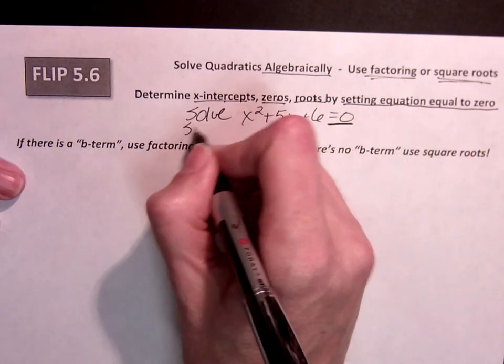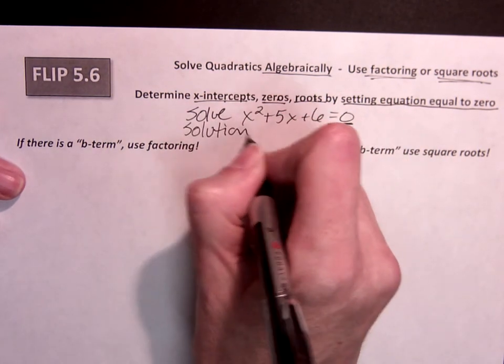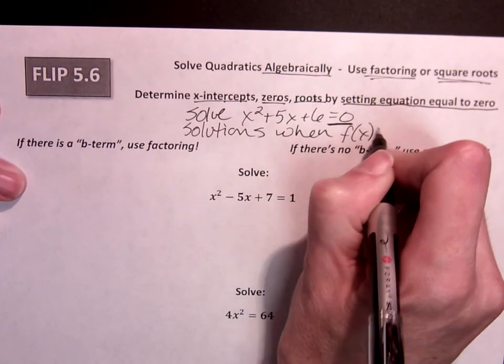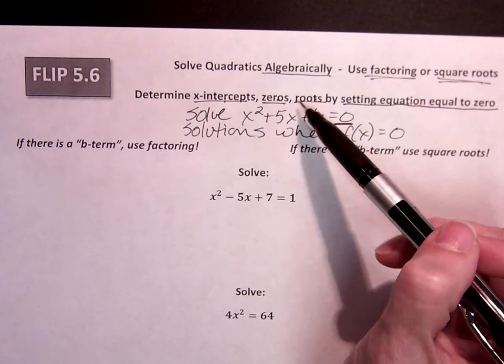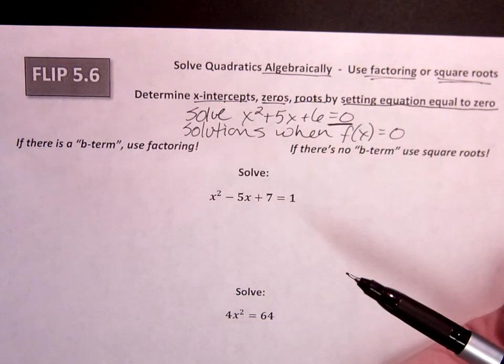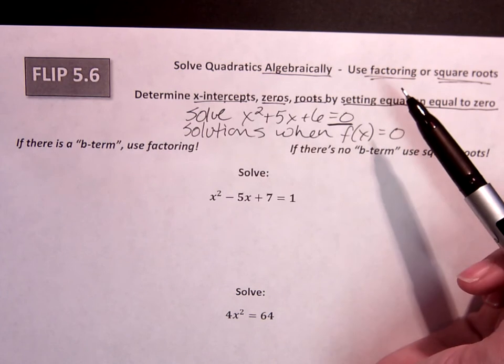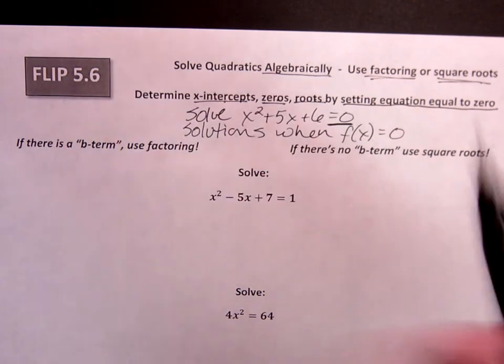Or the solutions when f of x equals zero. So we're talking about roots, zeros, x-intercepts. We can pull all this from a graph, but we can also do it algebraically. And we're going to look at these two approaches today.